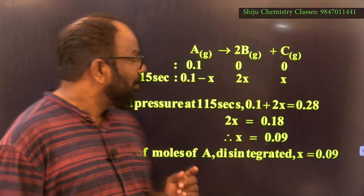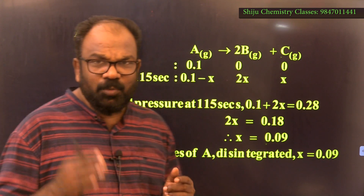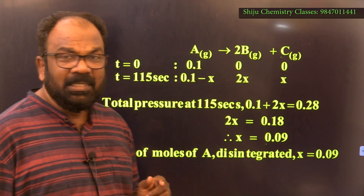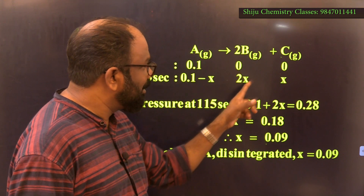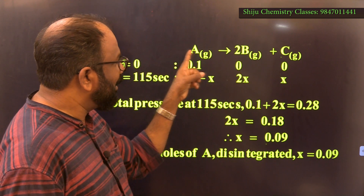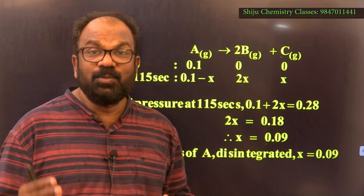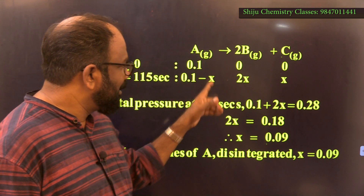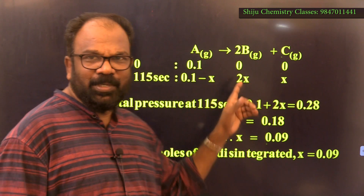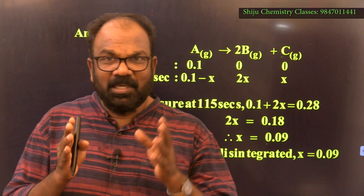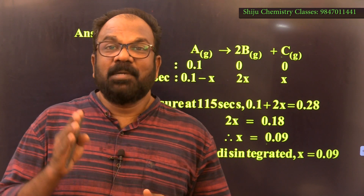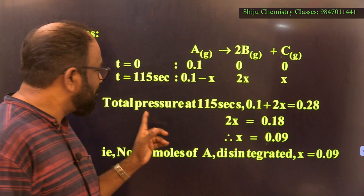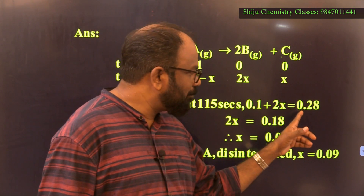At t = 115 seconds, assume x moles of A have dissociated. Then moles of A remaining = 0.1 − x, moles of B formed = 2x, and moles of C = x. Total moles = (0.1 − x) + 2x + x = 0.1 + 2x. This total is proportional to the total pressure of 0.28 atm at t = 115 s.